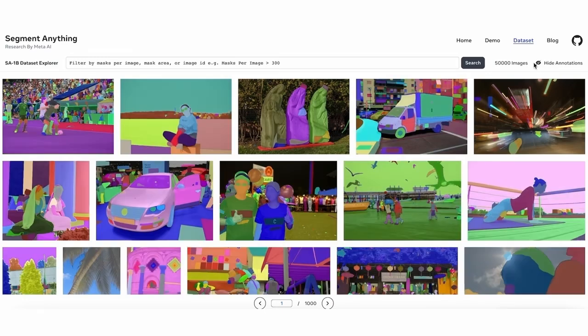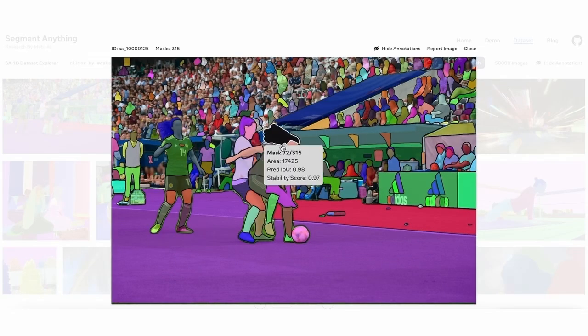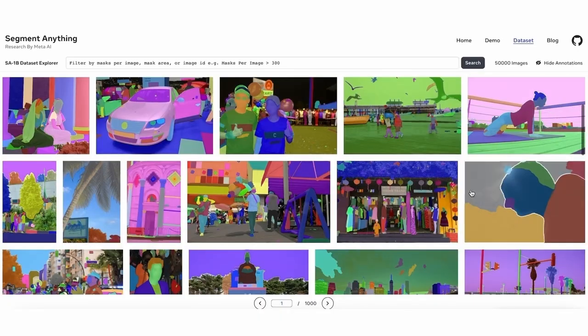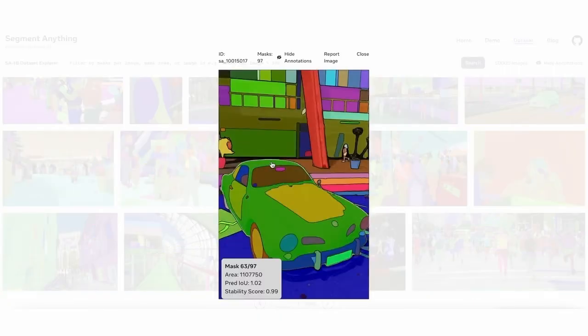Acquiring a dataset that is large enough to train a foundation image segmentation model is a challenging task because even though we have a lot of images on the internet, they are not labeled with segmentation masks. This paper not only comes up with a robust network architecture to create a truly interactive AI experience, they open source the largest image segmentation dataset in the history of time with 11 million images and 1 billion annotations.